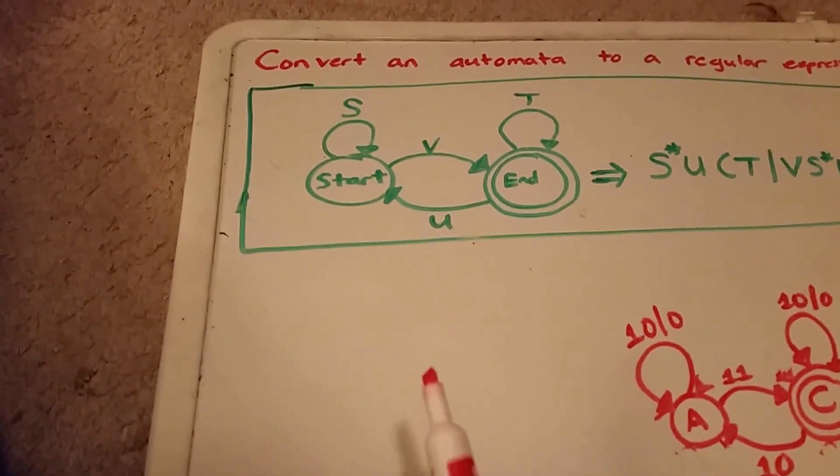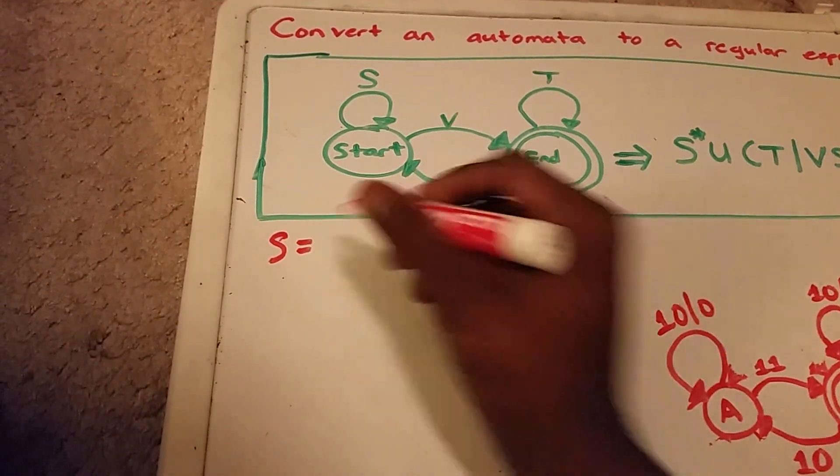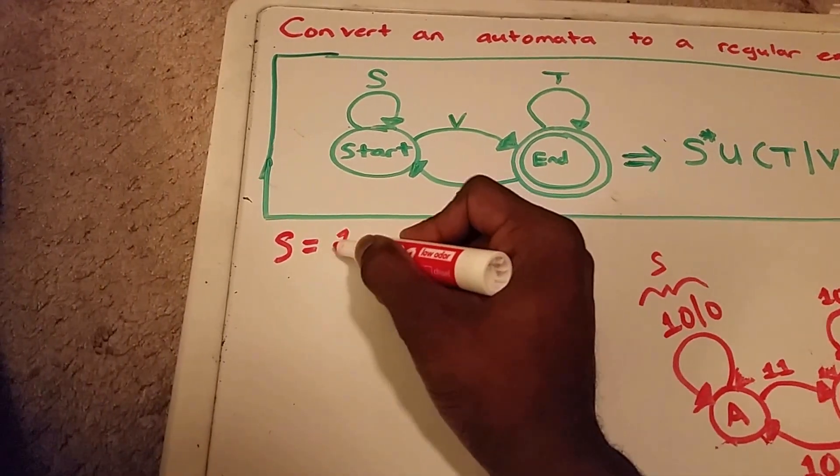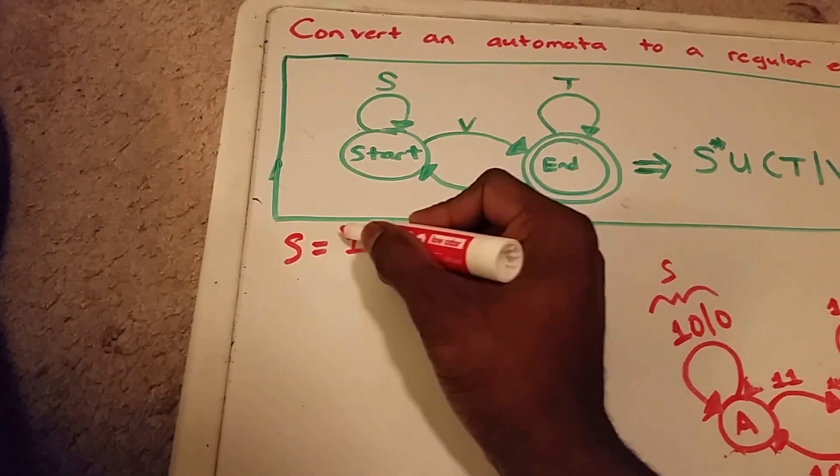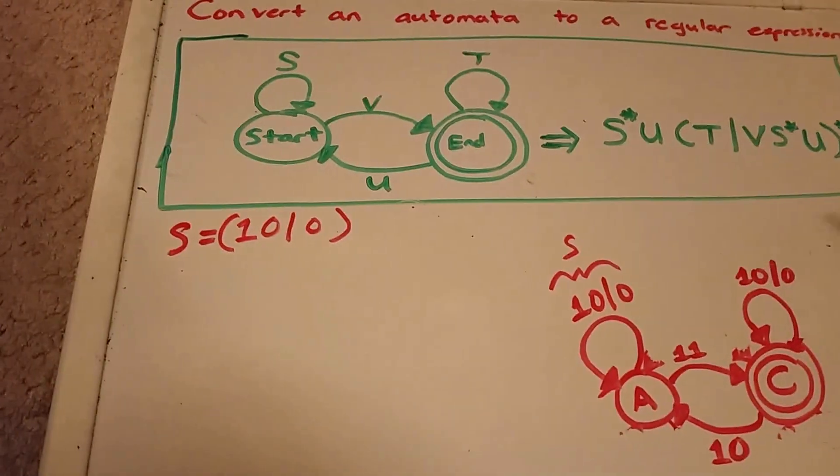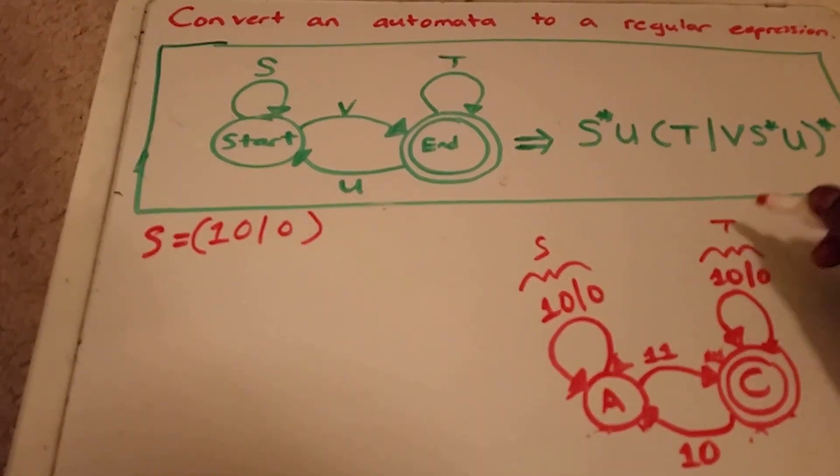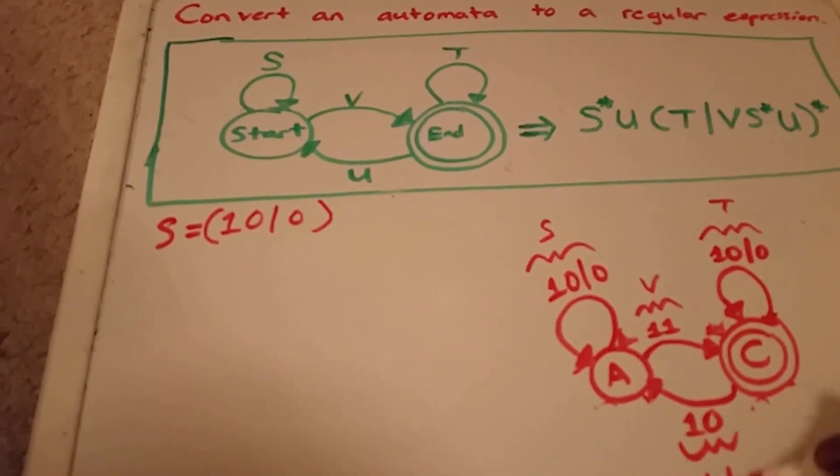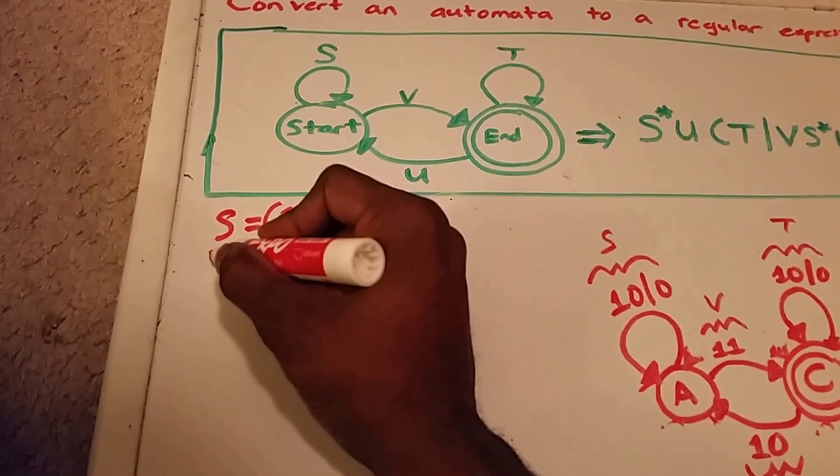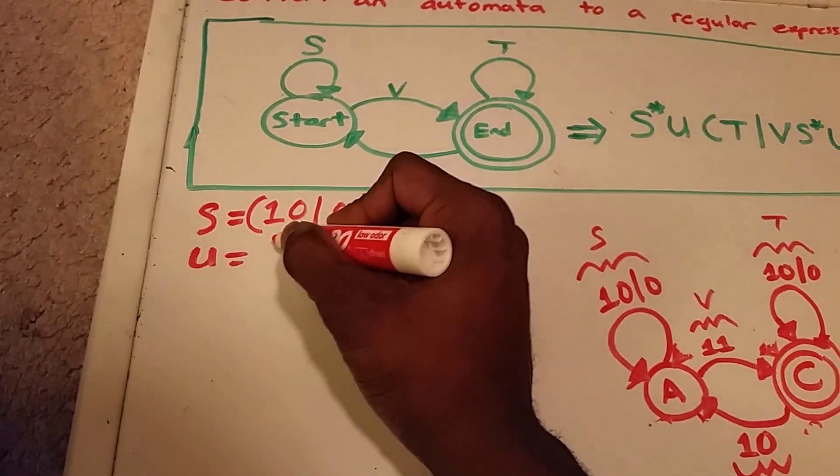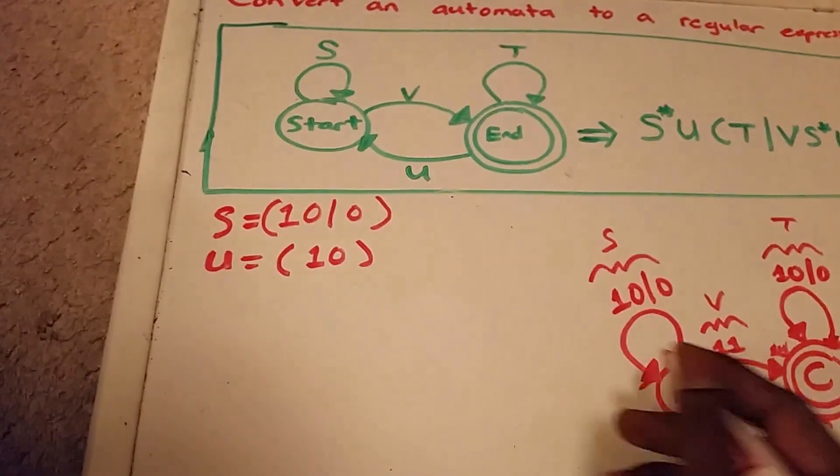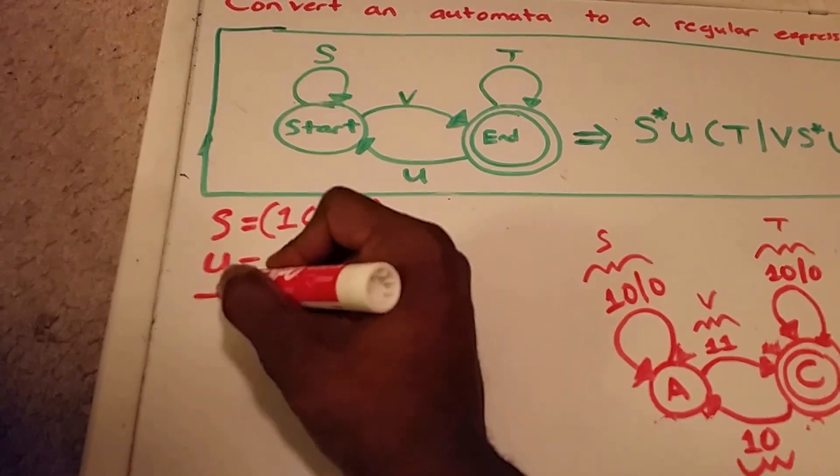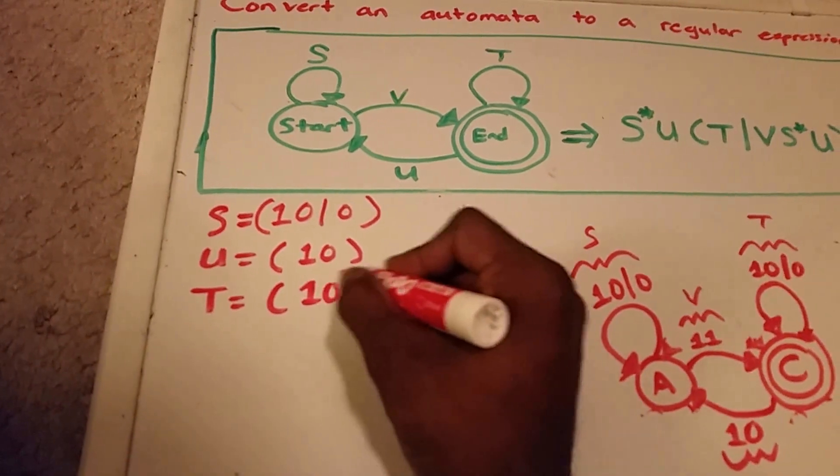So, what we have now, we have our S is equal to this here. So that's one, zero, or zero, we'll put that in parentheses. Here we have our T, here we have our V, and here we have our U. So, our U equals one, zero, we'll put that in parentheses as well. Our T is one, zero, or zero, one, zero, or zero.